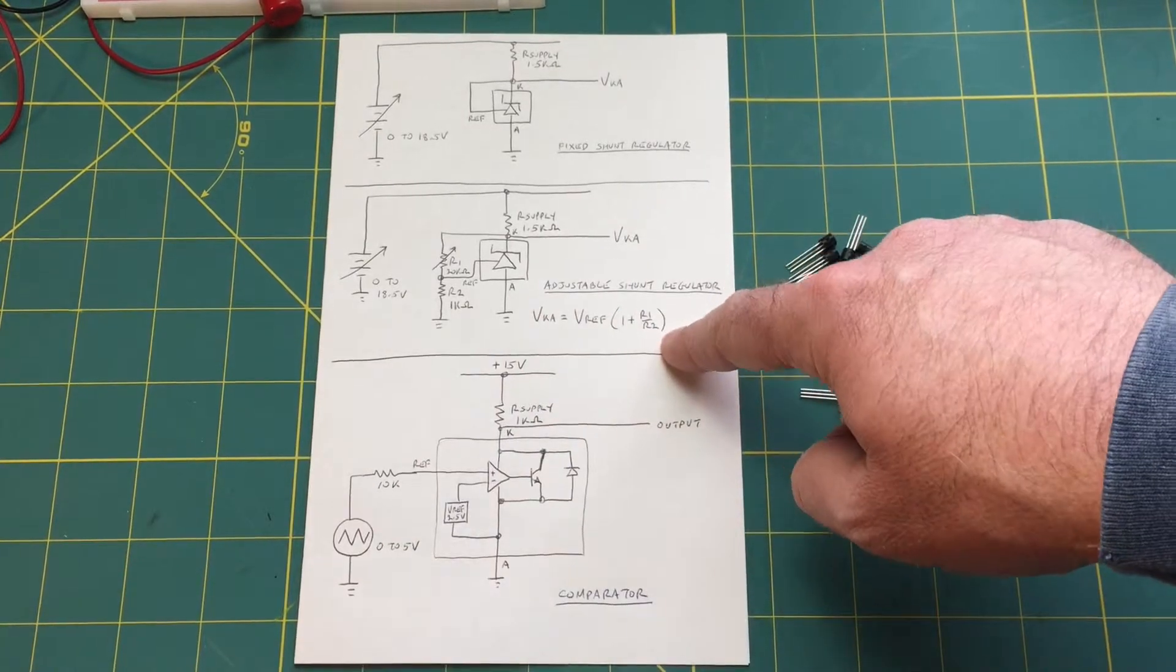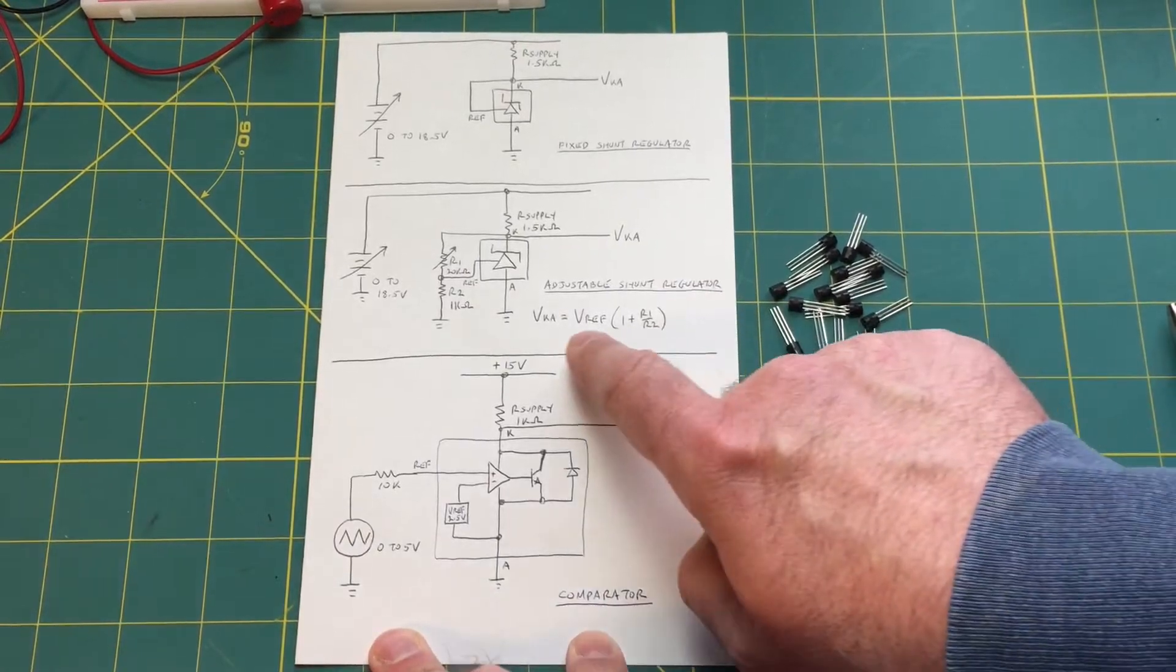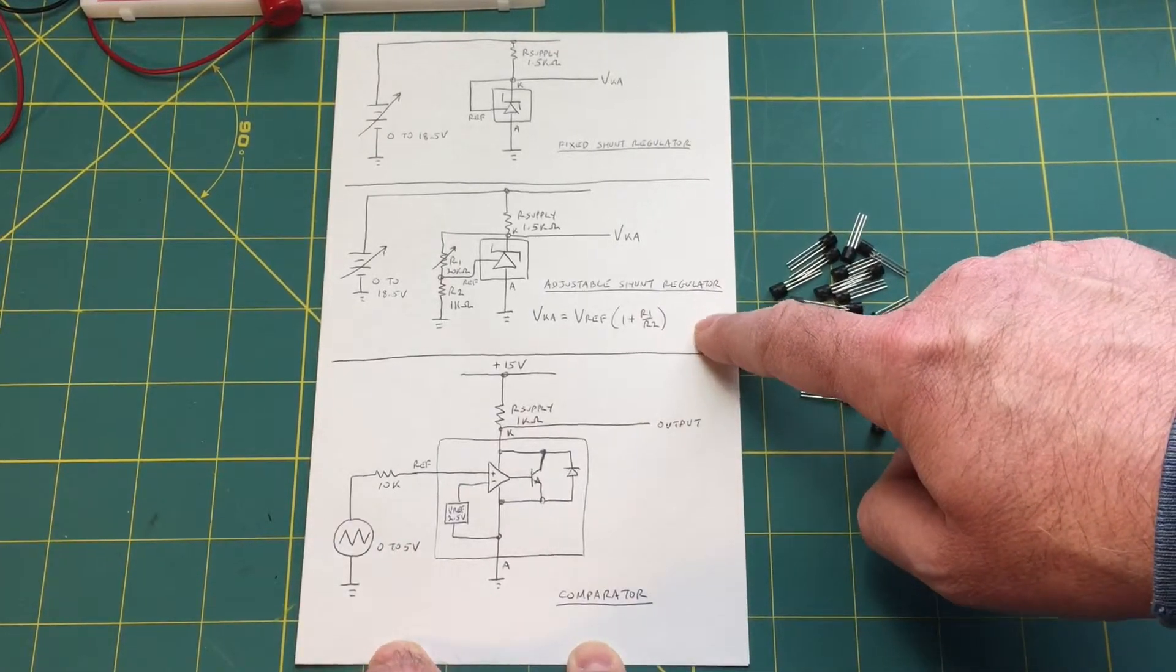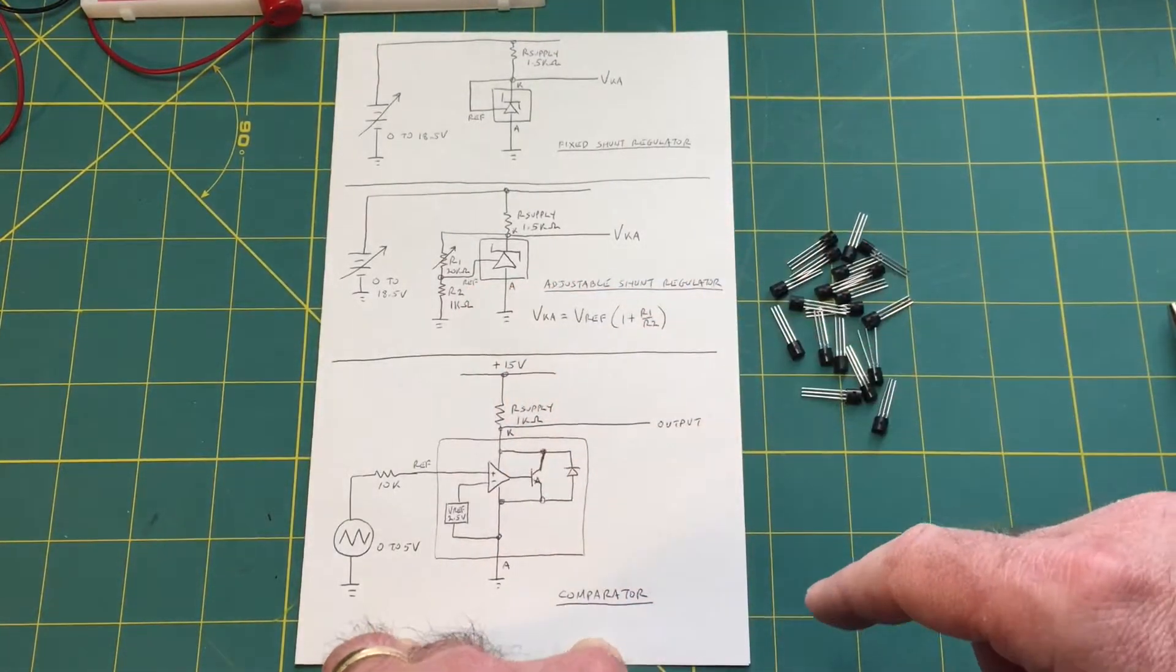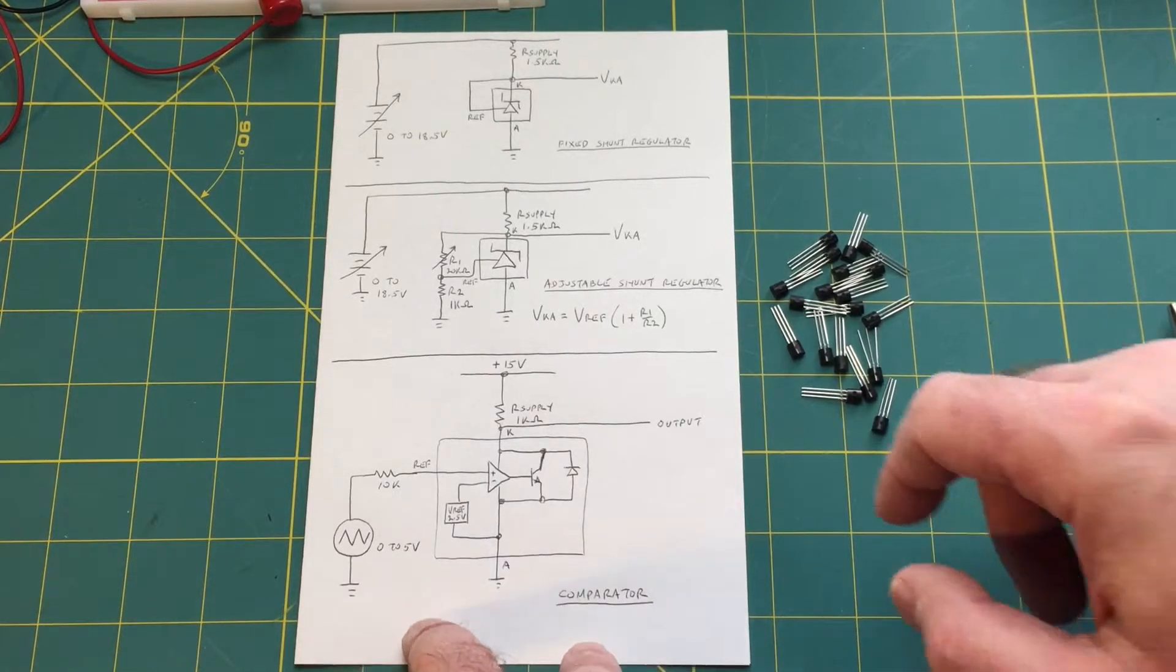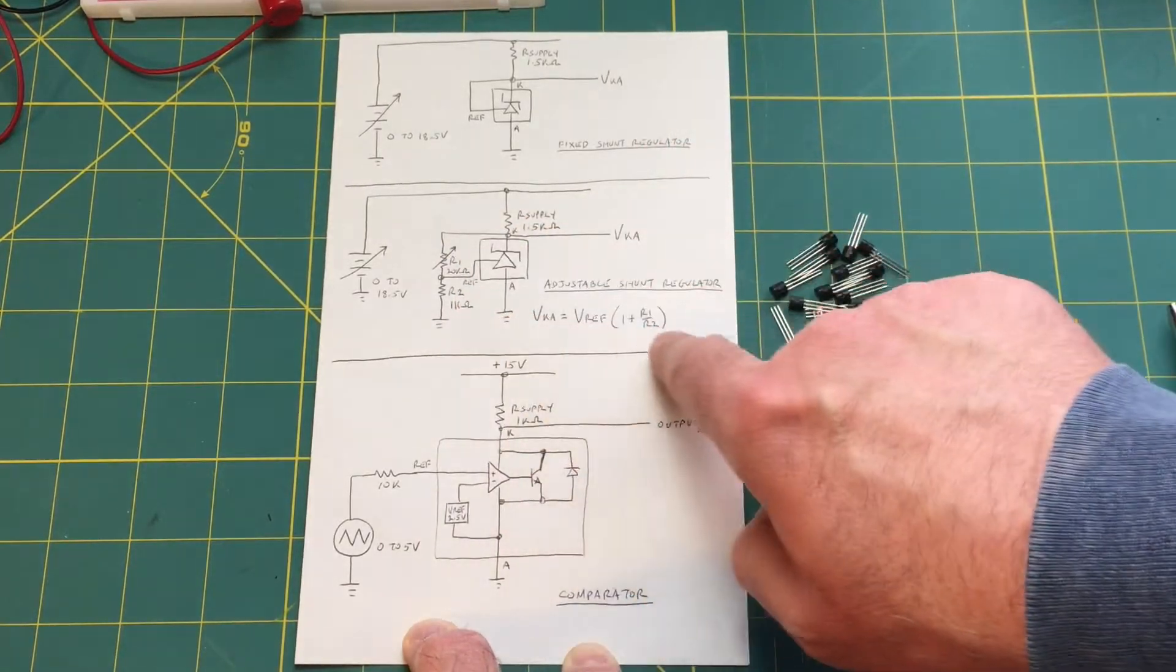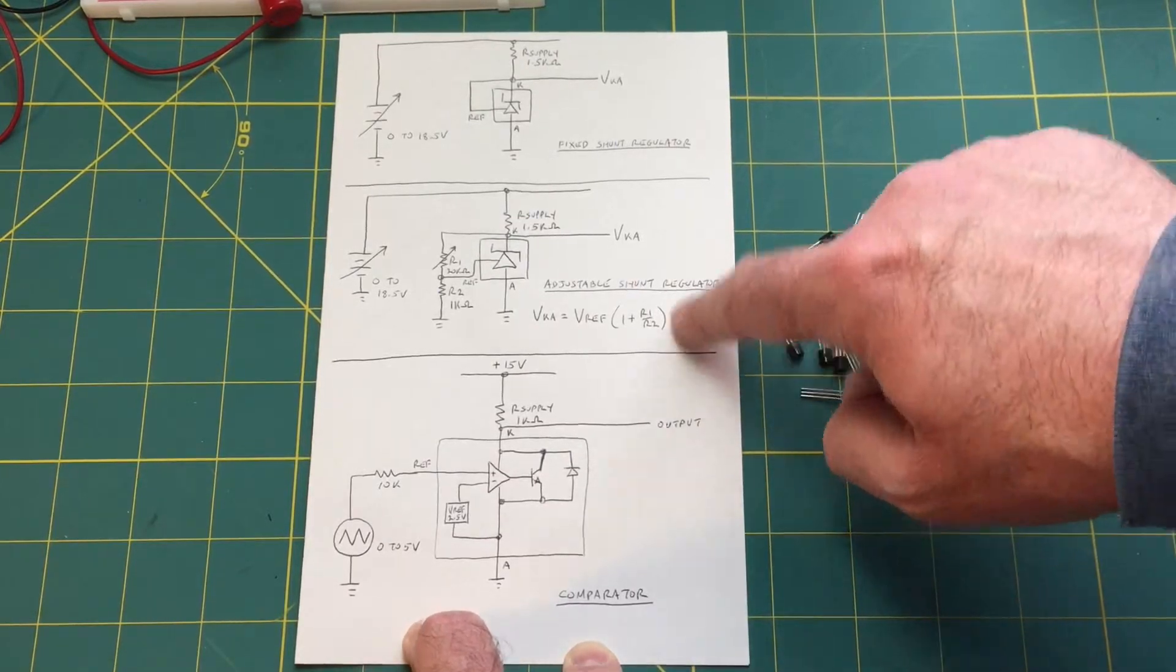Now this is the formula for calculating your output voltage. So you multiply V ref by 1 plus R1 over R2. Now there's an additional term that I left off here that deals with the bias current. So the ref pin requires a very small bias current. I believe it's maximum of 4 microamps. So because a little bit of your current is going into the V ref pin it introduces an error here in your calculation. But it's so small and it's not really important for this experiment so I left it off.